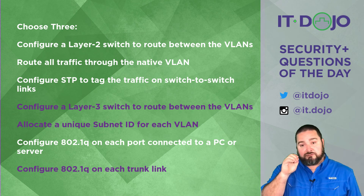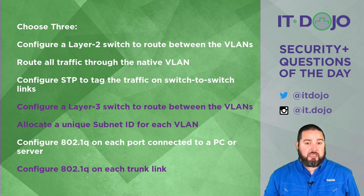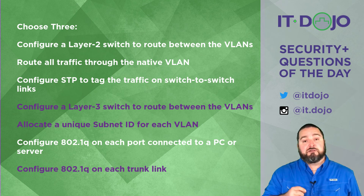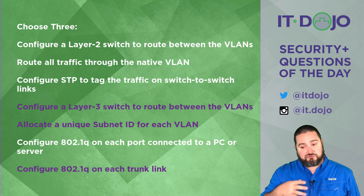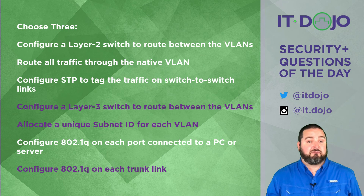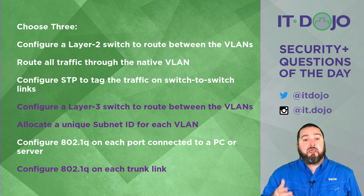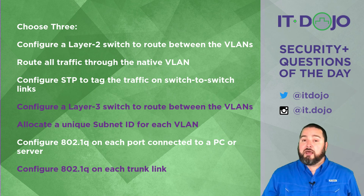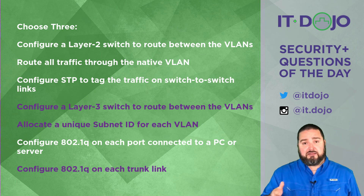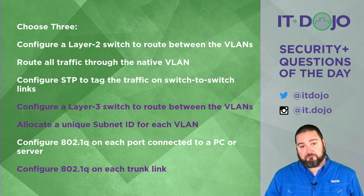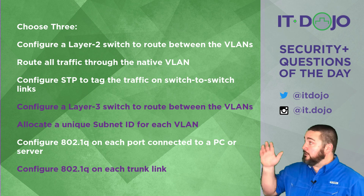Putting it all together: for intra-VLAN communication — say someone on VLAN 5 communicating with another user on VLAN 5 across two switches — traffic is tagged using 802.1q as it travels from switch one to switch two, labeled as belonging to VLAN 5. The Layer 3 functionality of your Layer 3 switch then gives you the capacity to route between VLANs, such as VLAN 5 to VLAN 6. This works because you've created unique subnet IDs for each individual network, allowing each to be uniquely identified at Layer 3, with each node having a unique host identifier.